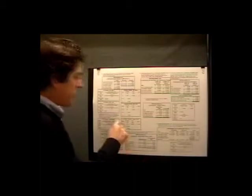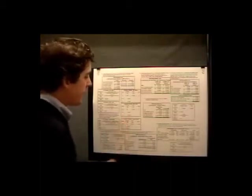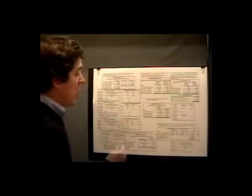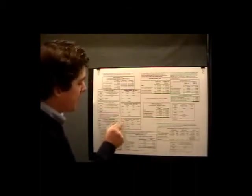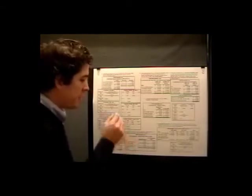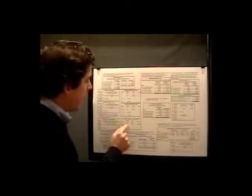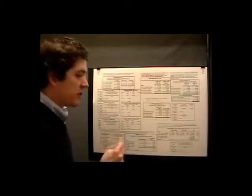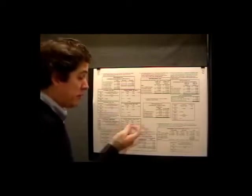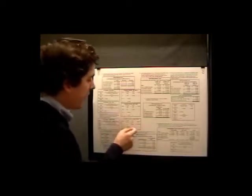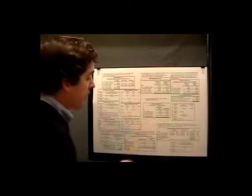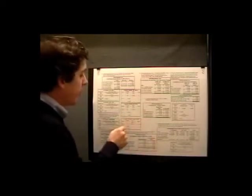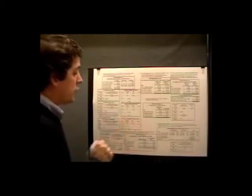Under the equation method, sales equals variable cost plus fixed cost plus profit. So 10q equals 6q plus $20,000 plus $25,000, where $10 is our selling price and $6 is our variable cost per unit. Solving for q, we get 4q equals $45,000, so q equals 11,250 units.